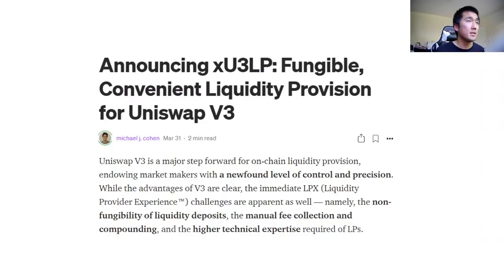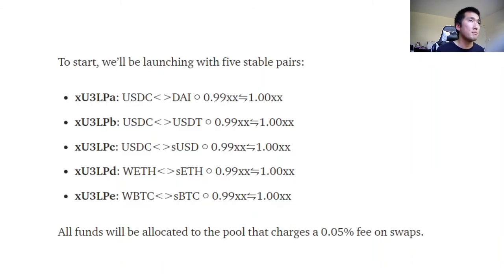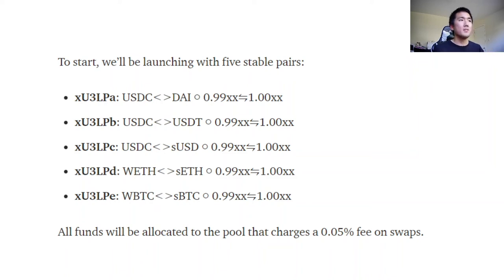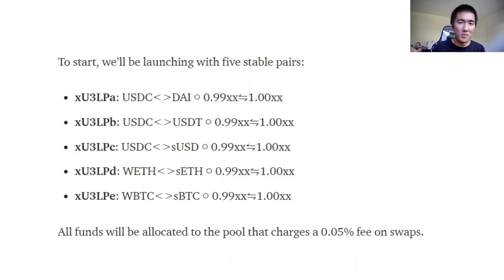Two weeks ago, they announced a new product for Uniswap V3. The five pairs launching are three USDC stablecoin pairs, an ETH pair, and a BTC pair. This makes sense conceptually because for the same asset pairs the protocol can assume prices won't differ much, so for USDC and DAI the LP can just focus on the 0.999 to 1.01 range.